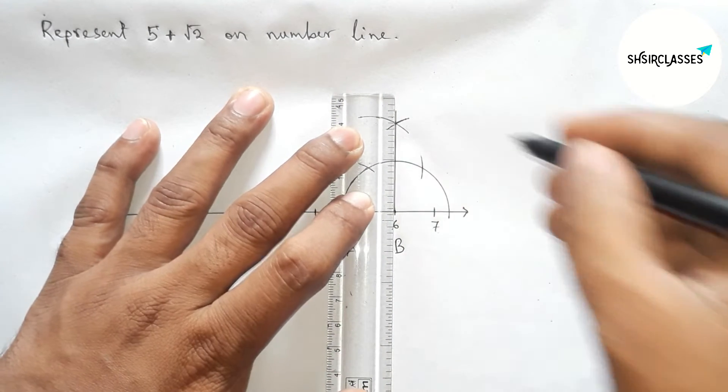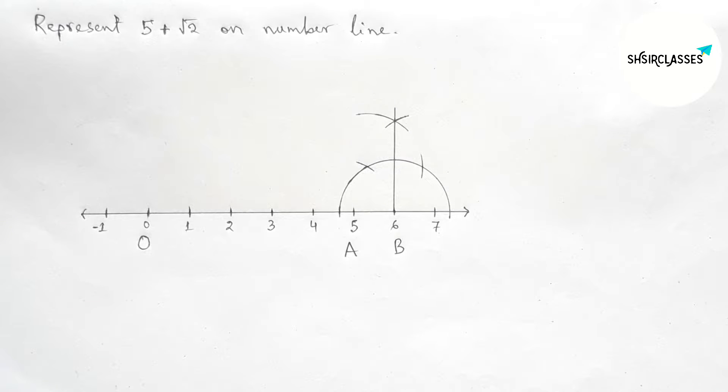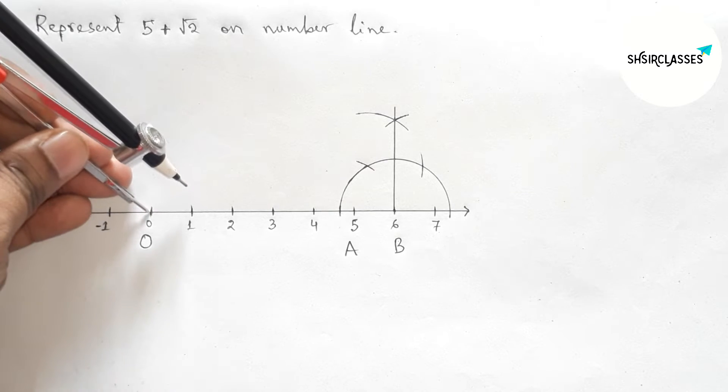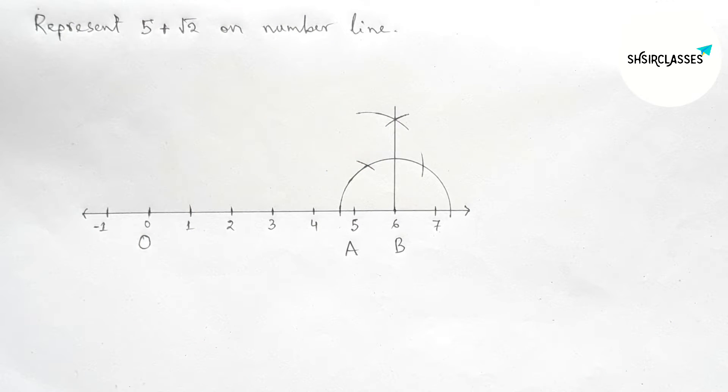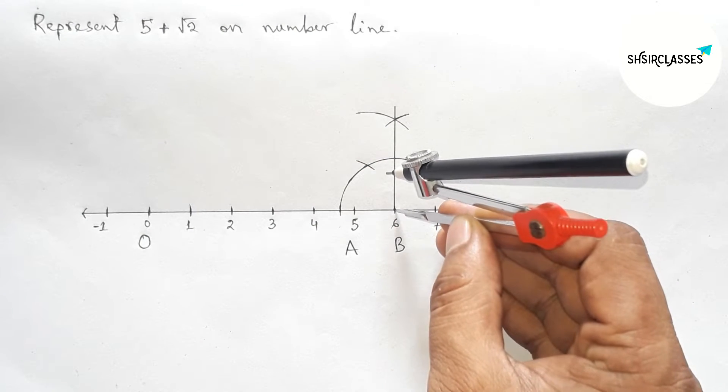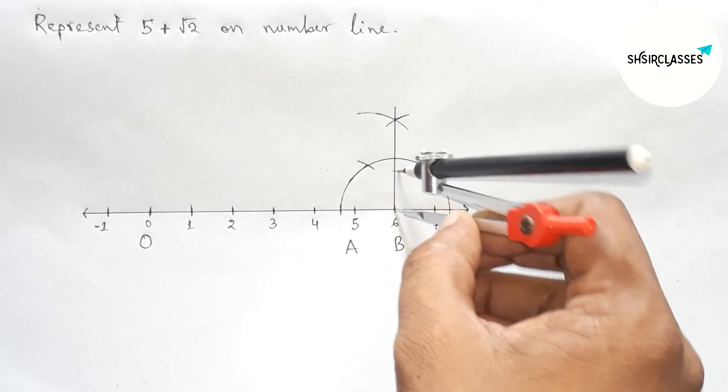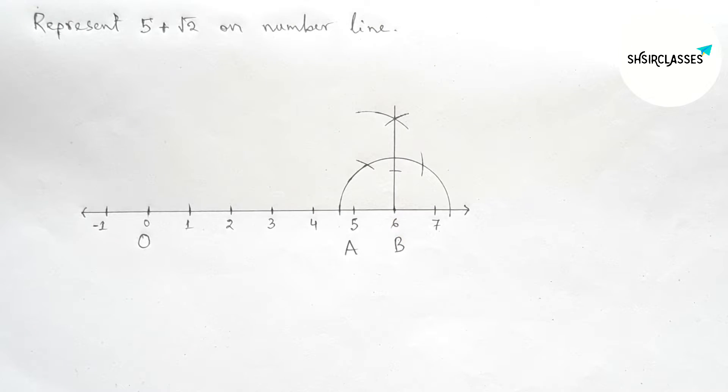Next joining this to get here a 90 degree angle or a perpendicular line. Now taking one unit length between any two numbers, so this is one unit length. Putting the compass on the point B and cut the perpendicular line here, taking point C.